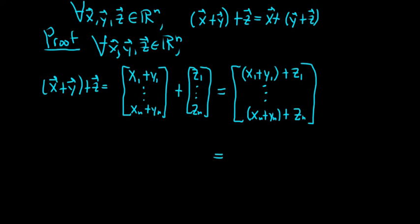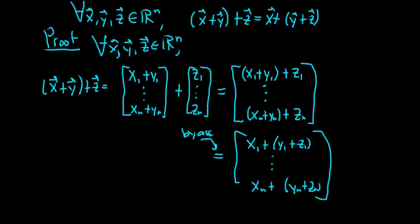And now we can use associativity of the real numbers. So this is by associativity, this step here. Normally you would write it in a proof, so I'll just put by ASS. So using associativity on each of the components, we would get x1 plus, and then parentheses, y1 plus z1... And then x sub n plus parentheses, y sub n plus z sub n parentheses.